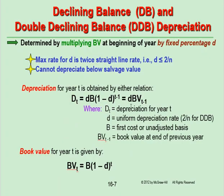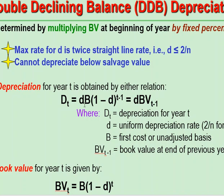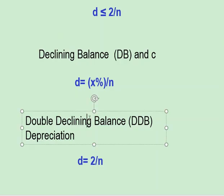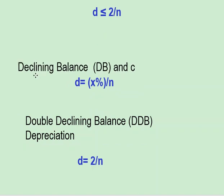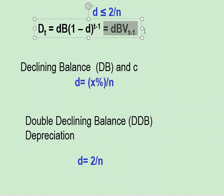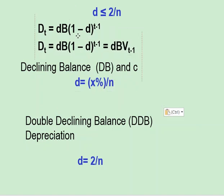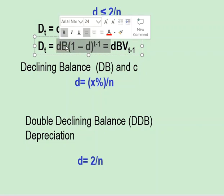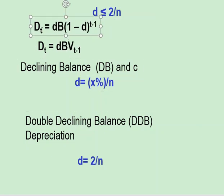Whether it is declining balance or double declining balance, we use the same two formulas. The first formula: if you want the depreciation at year t, it is the rate of depreciation d multiplied by the initial cost B, times (1 − d) to the power of (t − 1). So for year five, the exponent would be four.